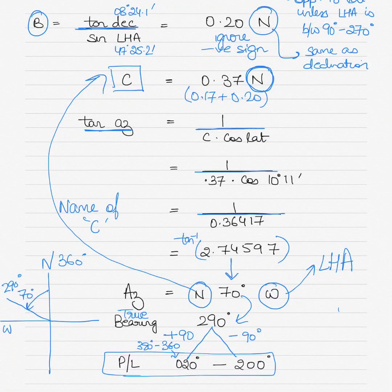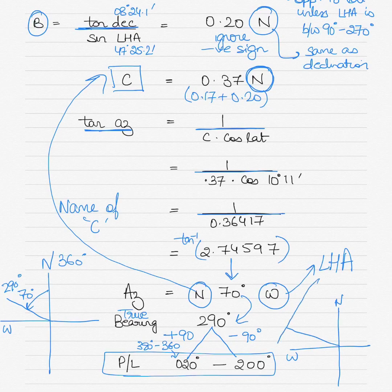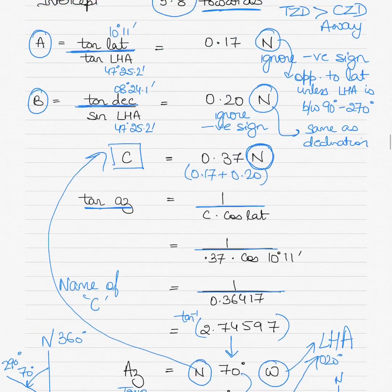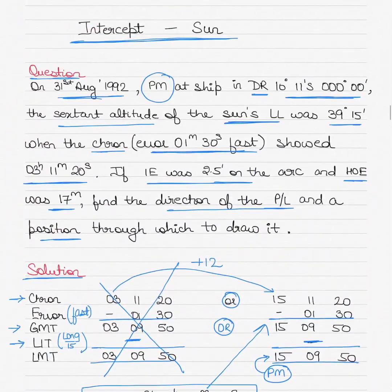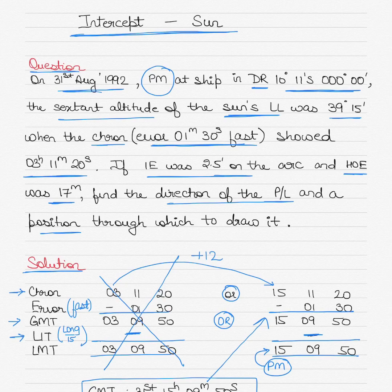A line drawn perpendicular to the true bearing of 290 degrees will be in the orientation of 020 and 200 degrees. This was an intercept question using the Sun as an example. More examples using other celestial bodies will follow in future videos. Study hard and leave any feedback or comments.